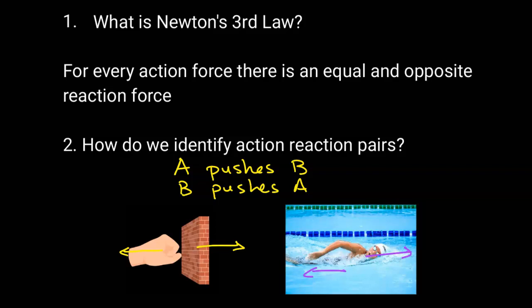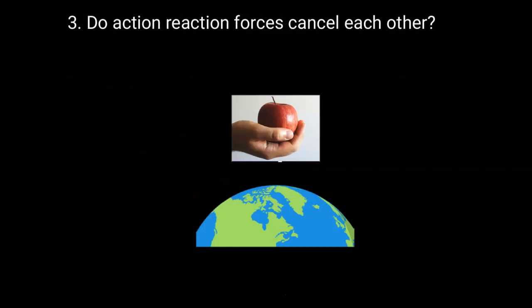These forces are action-reaction pairs — they are in opposite directions and equal in magnitude. Do action-reaction forces cancel each other? The answer is no, they don't cancel each other because they act on different objects. Let's use a hand holding an apple as an example. There are two forces acting on the apple: the gravitational force of the earth pulling the apple down, and the force of the hand pushing the apple up.